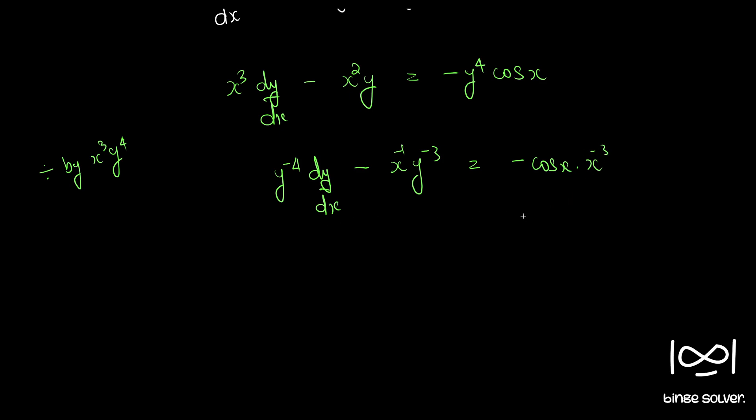So now this is in Bernoulli's equation form and we can use a substitution v equal to y raised to minus 3. Minus 1 is minus 4 dy by dx equal to dv by dx.